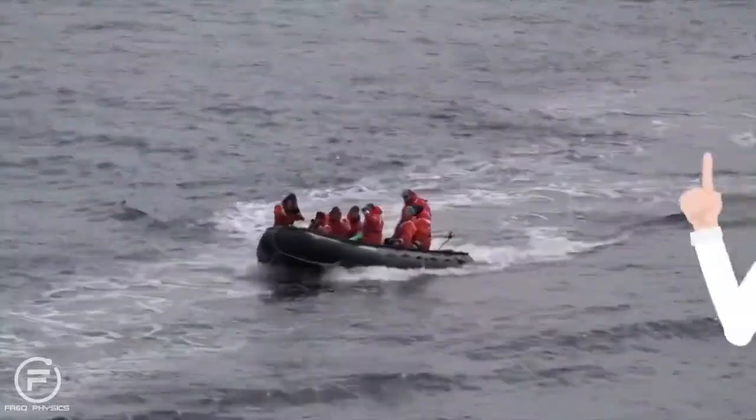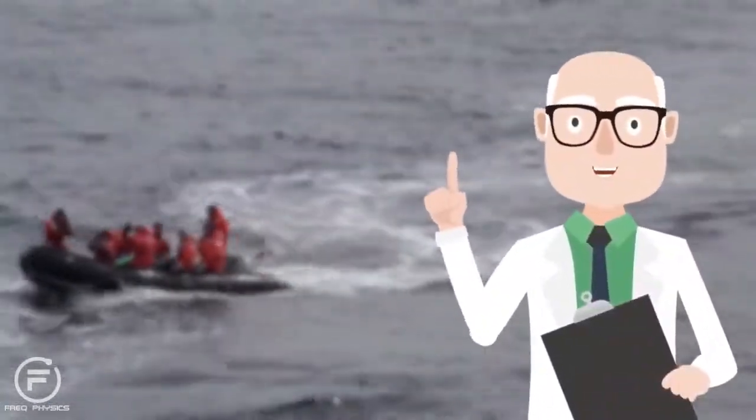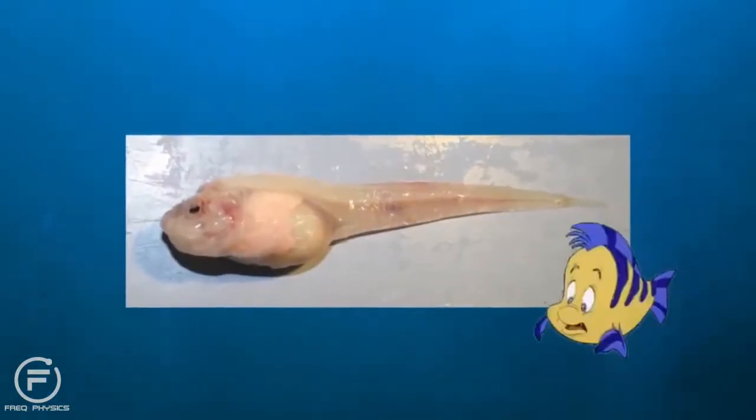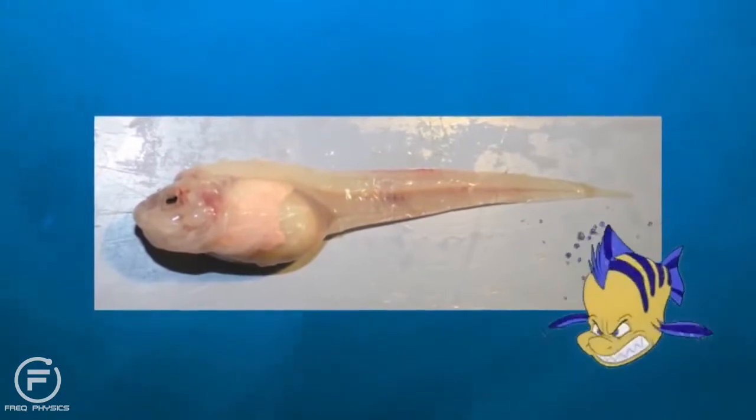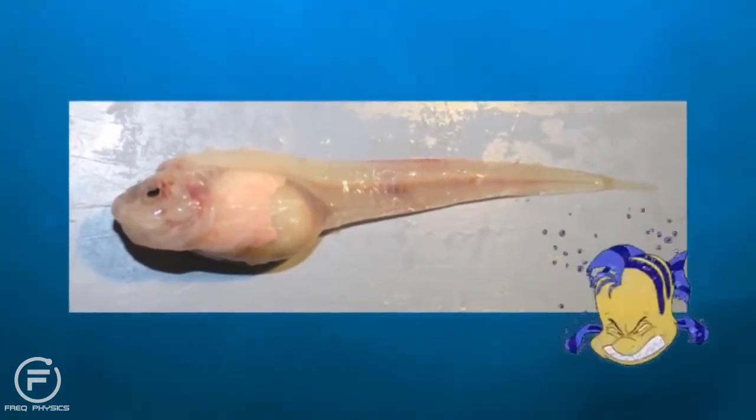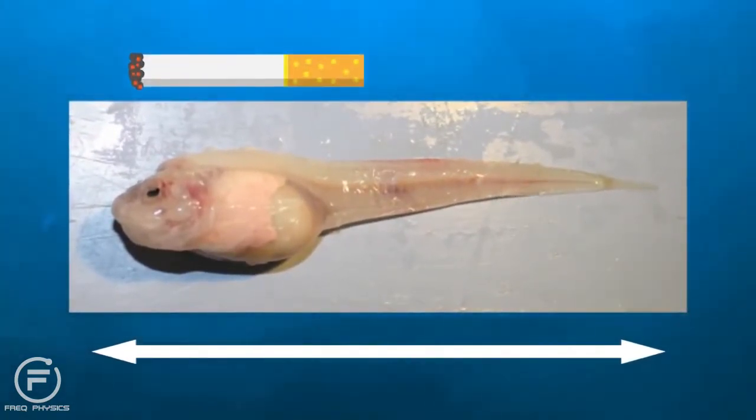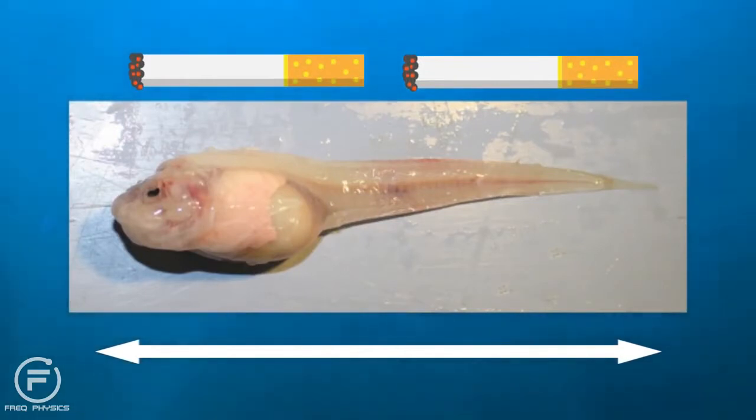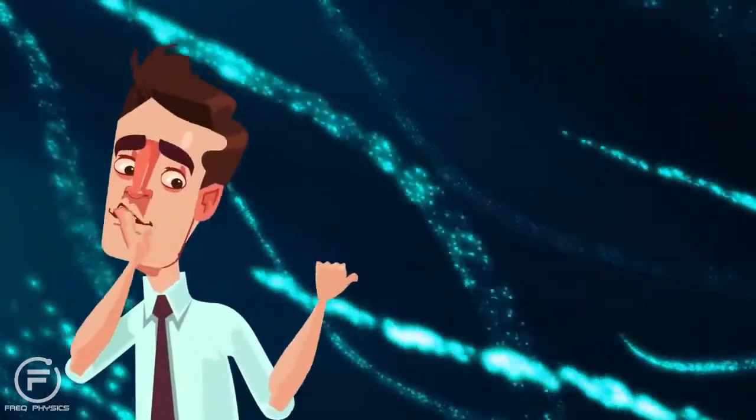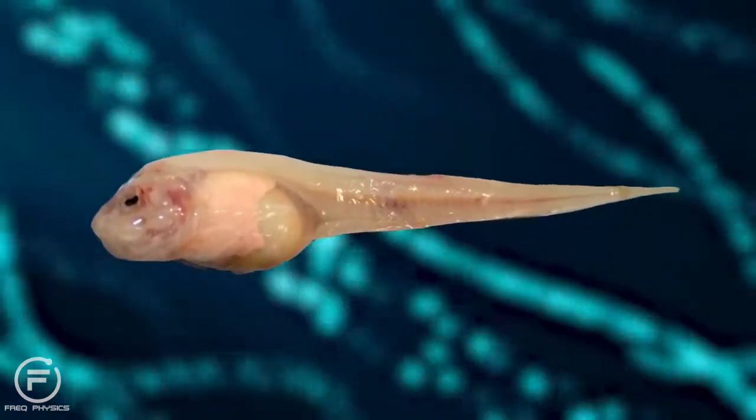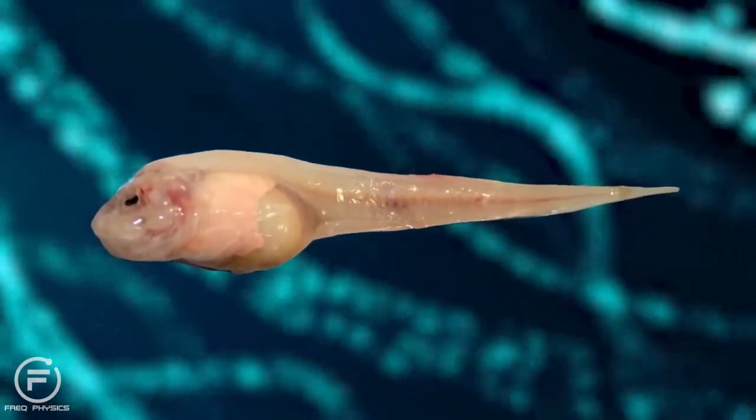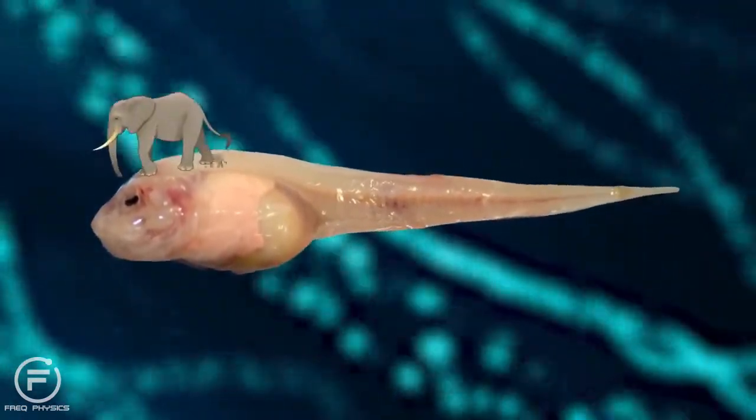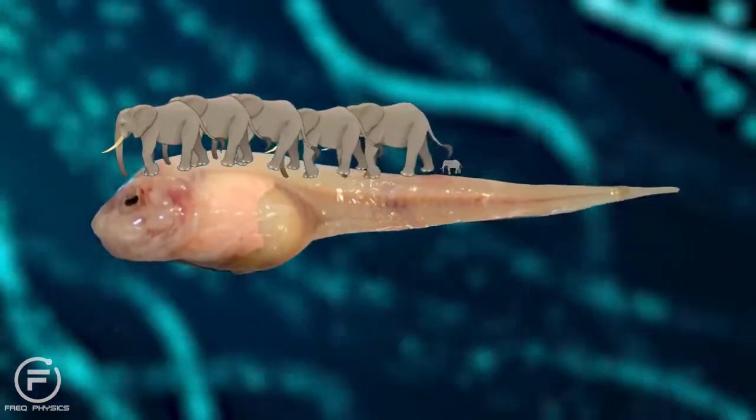In November, scientists officially documented the deepest living fish in the world. It's a cute pinkish creature with skin so translucent that you can see its internal organs. This fish is about the length of two cigars and seems extremely fragile. But don't let its appearance fool you. In fact, this snailfish can survive water pressure that would be as heavy as having 1,600 elephants standing on it.